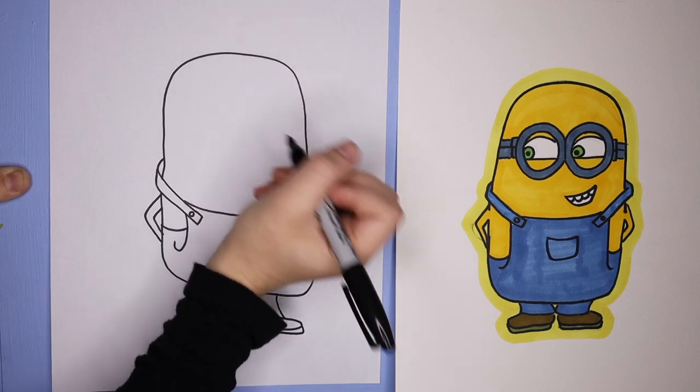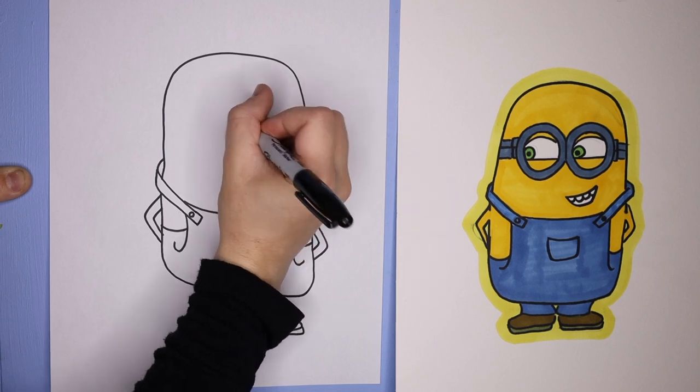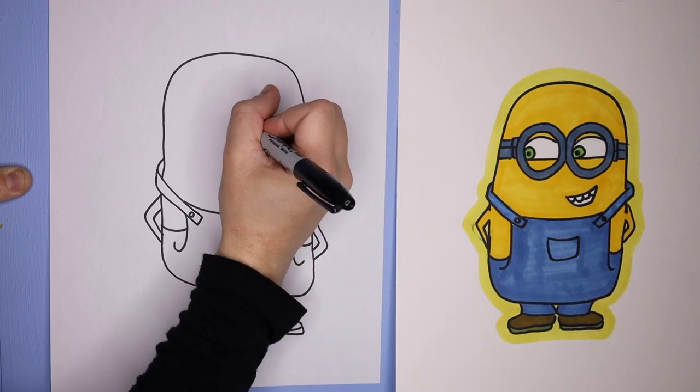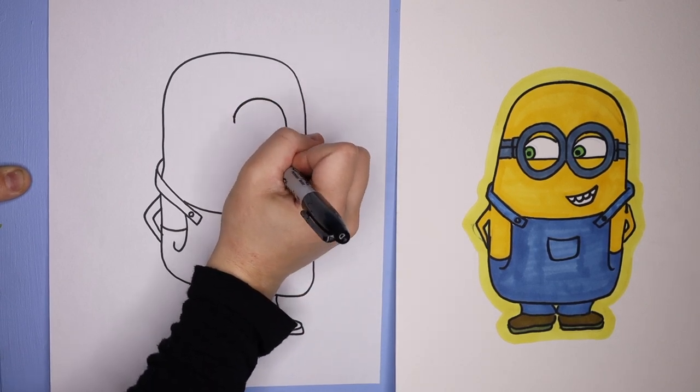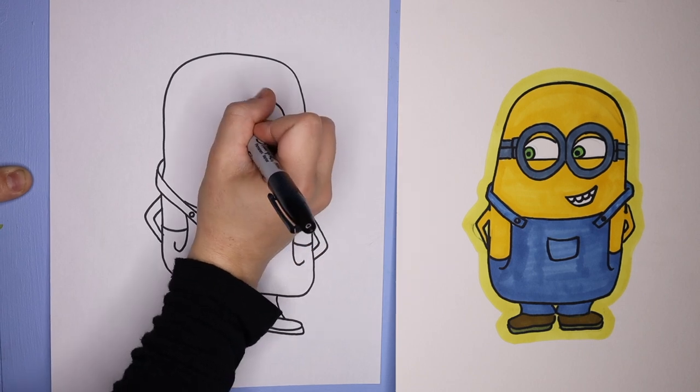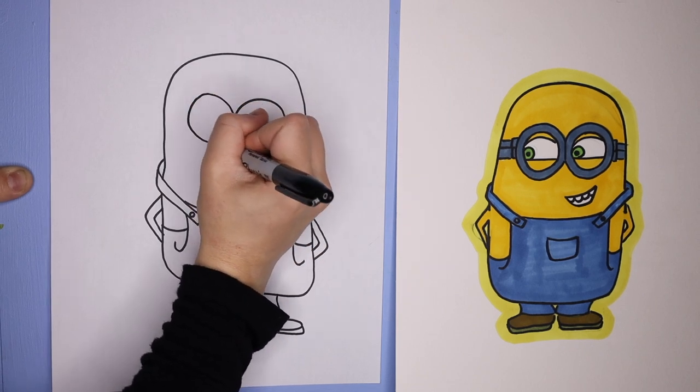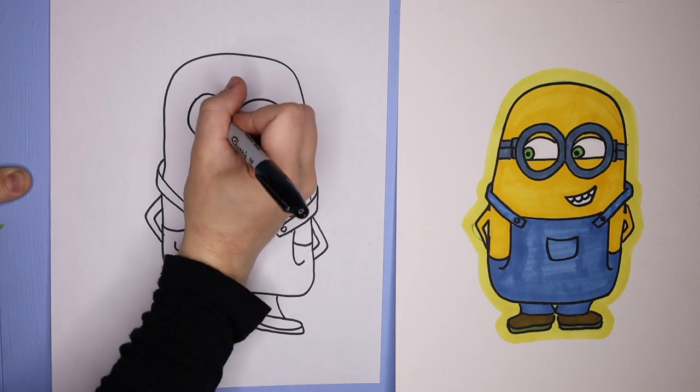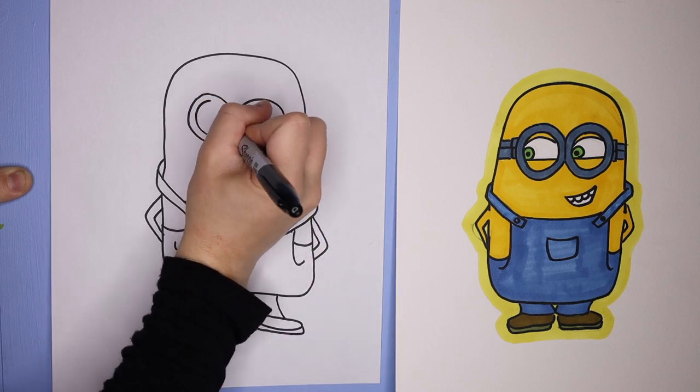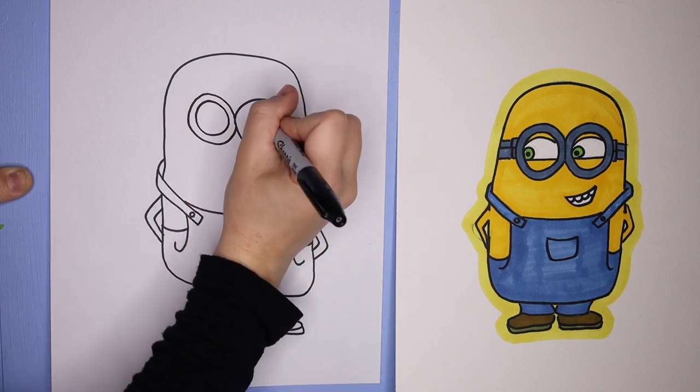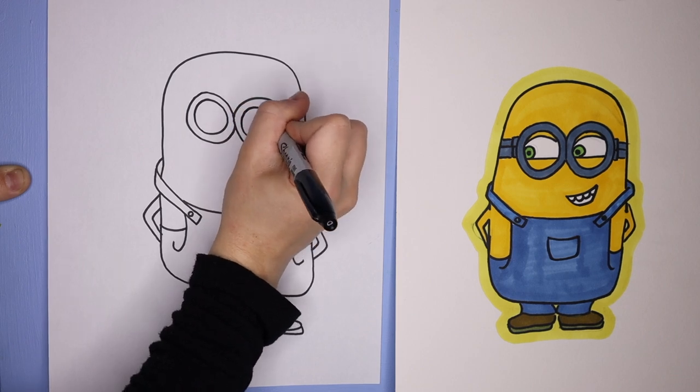Then we're going to do the eyes. So for the eyes, I like to start with a line in the middle, and we're gonna do the glasses first. So we're gonna make a nice big circle going around from that center line and then the same thing on the other side. It's okay if they're not perfect. And then we're gonna draw two big circles on the inside there, and that's going to be where the eyes are going to go.